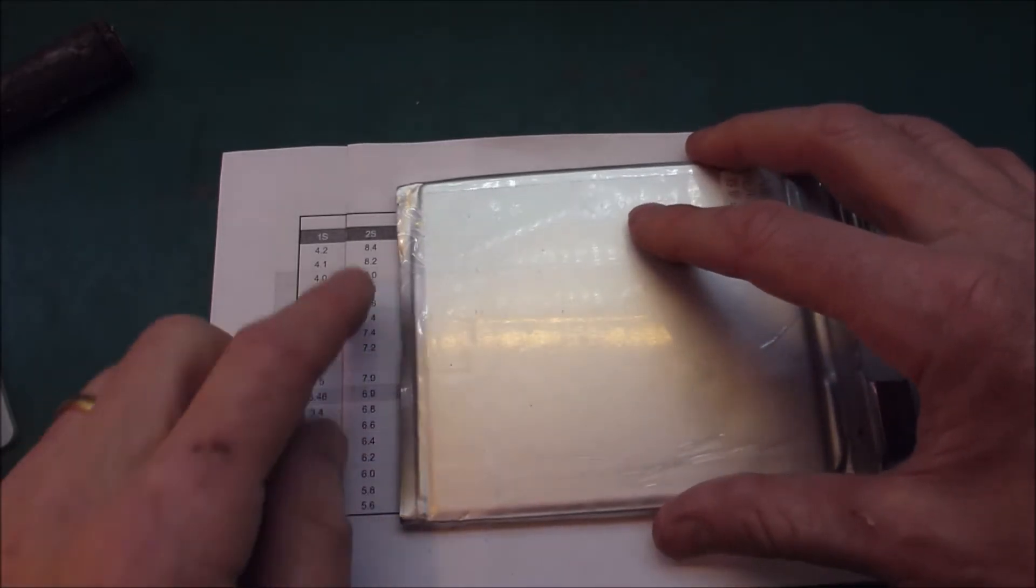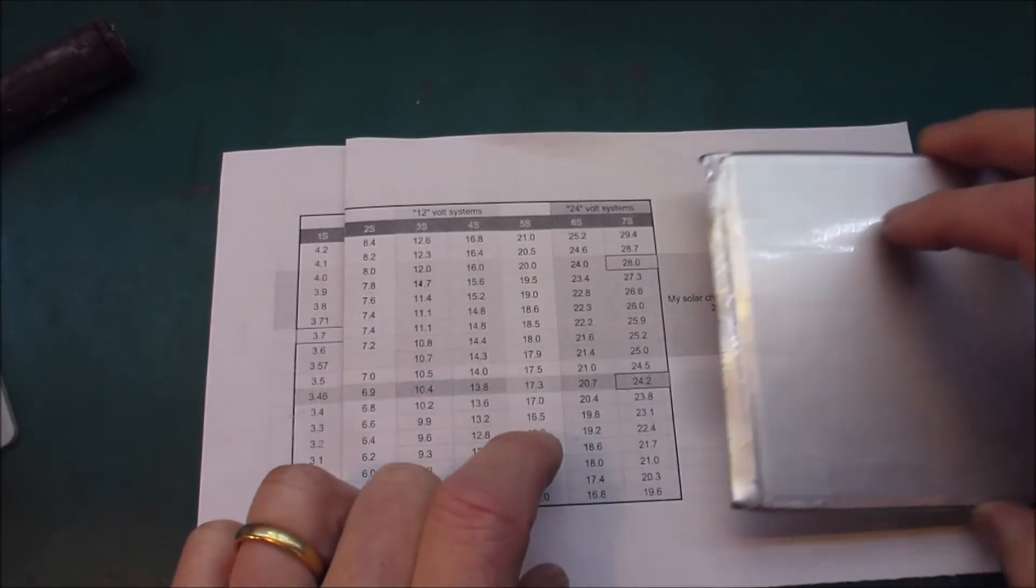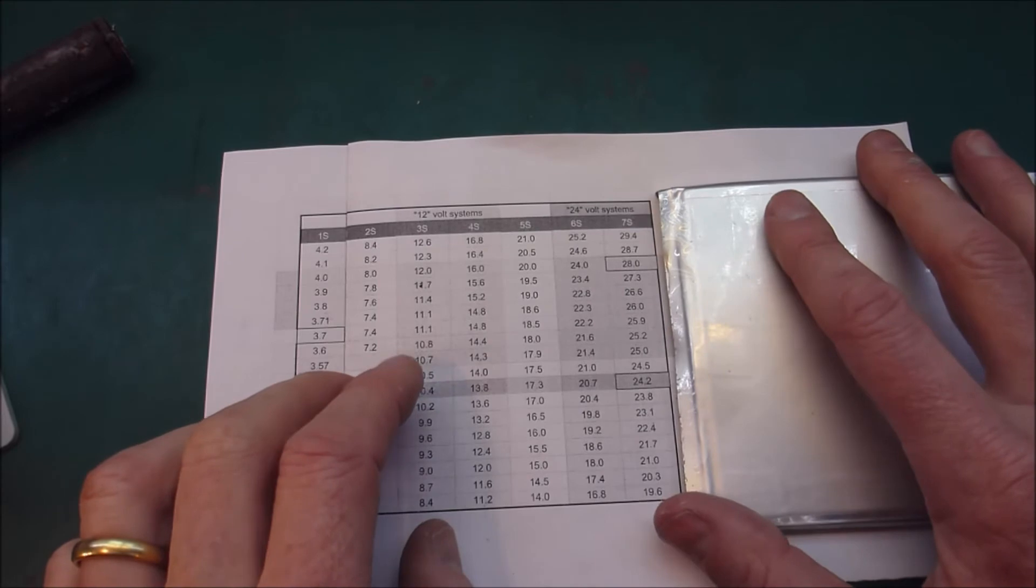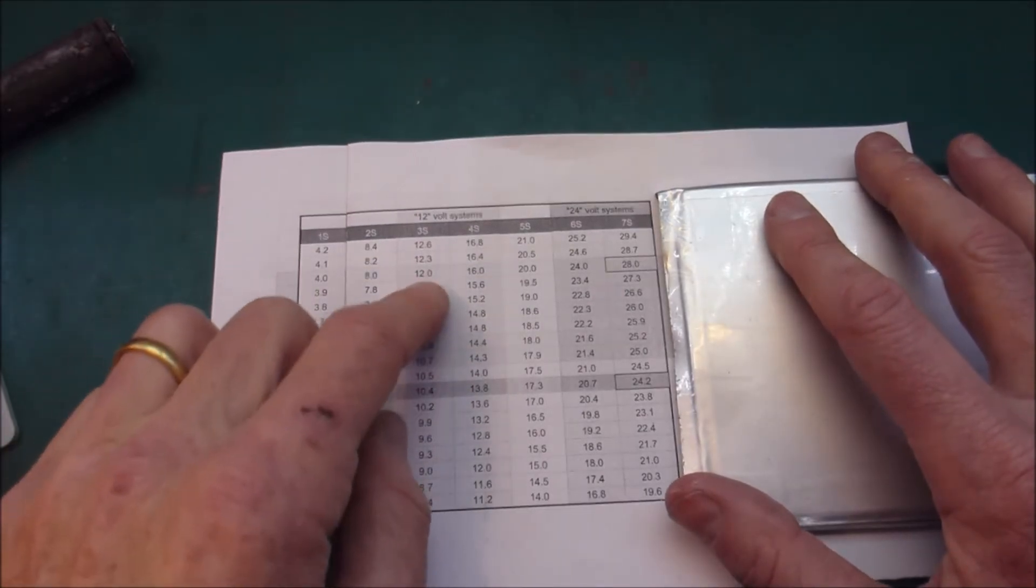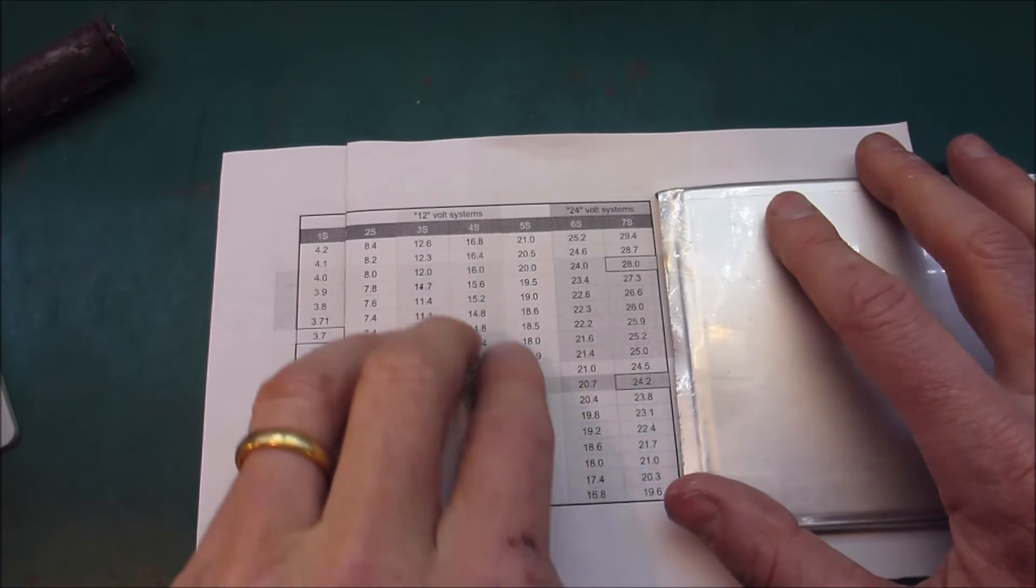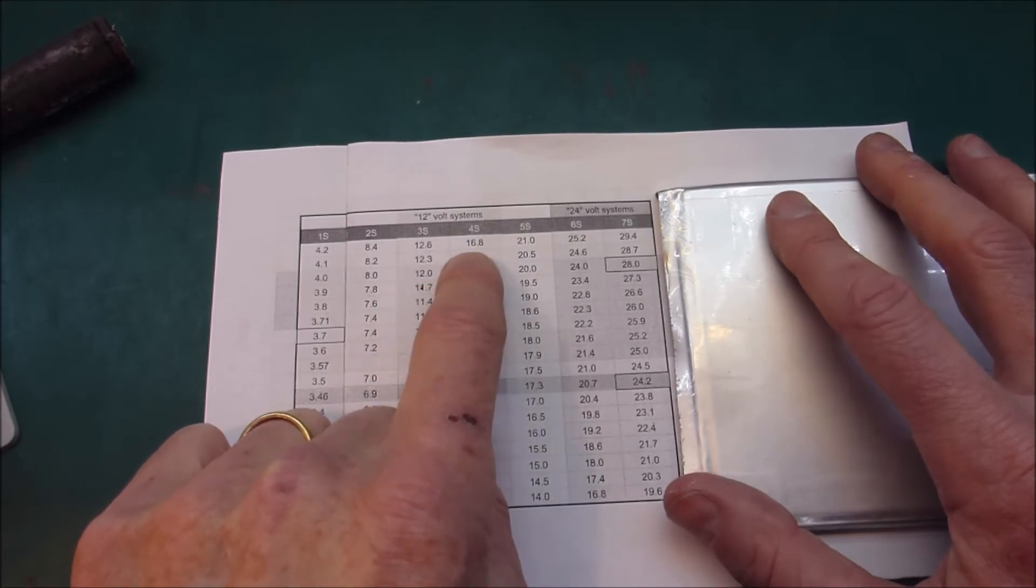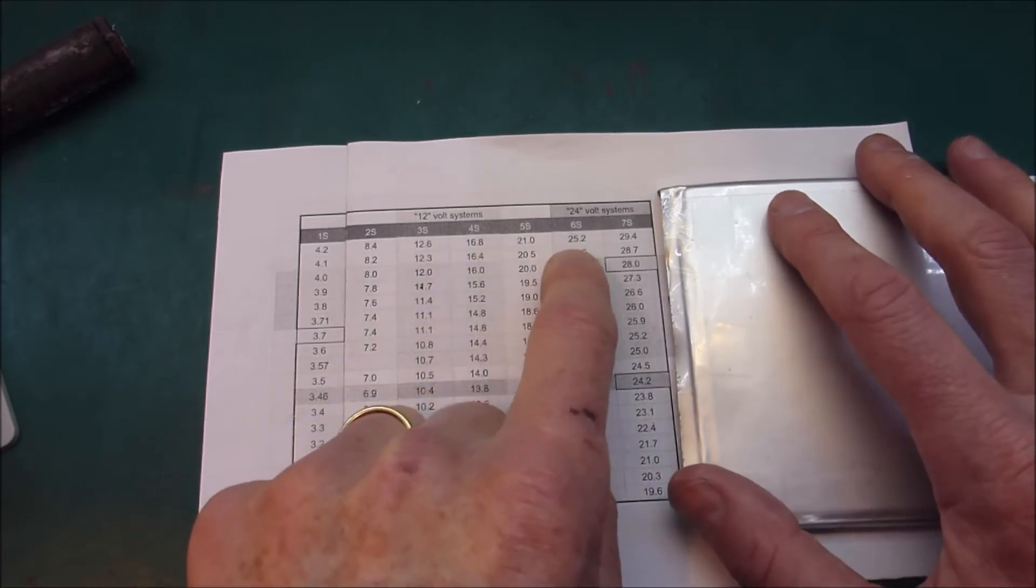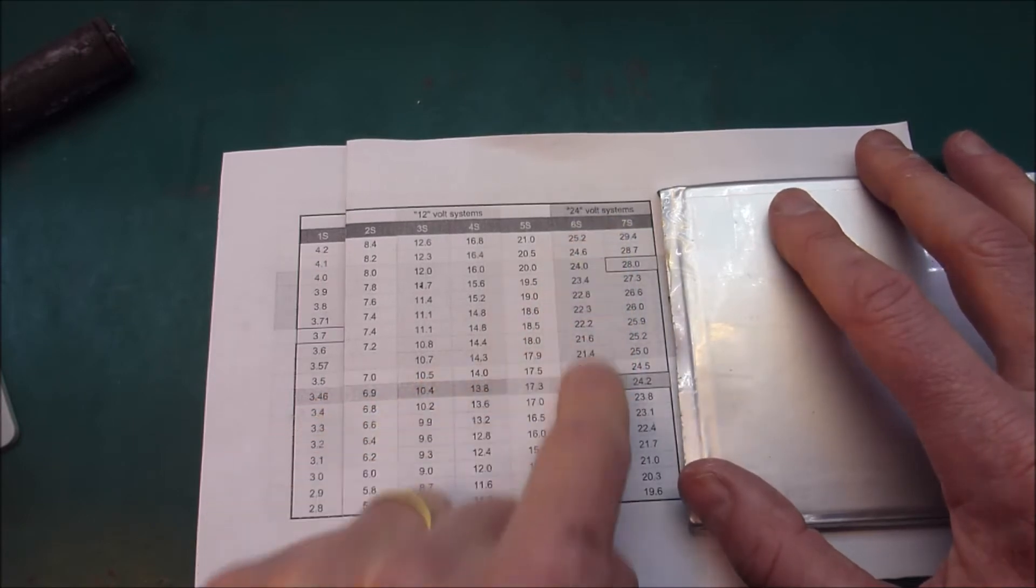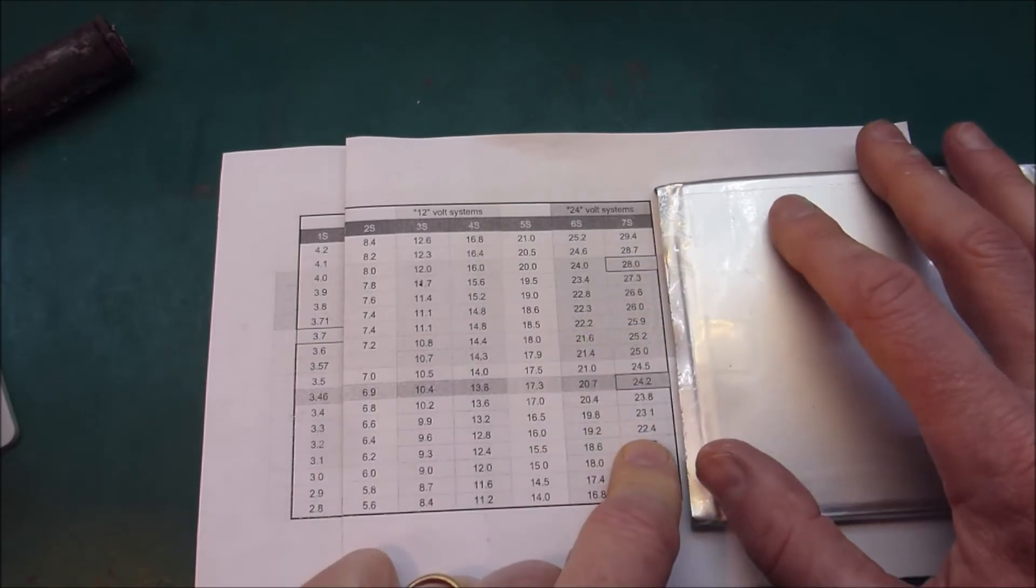And you can do the same thing for 2S, 3S, 4S, 5S, 6S and 7S. And if you are running a 12 volt system you'll be running either 3 or 4S. So you'll be looking for maximums of either 12.6 or 16.8. And if you're running a notionally 24 volt system you'll be running either 6S or 7S. I run a 7S system.